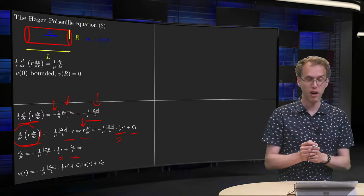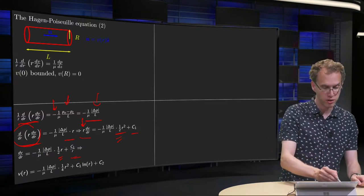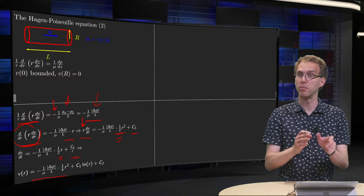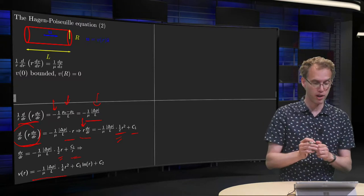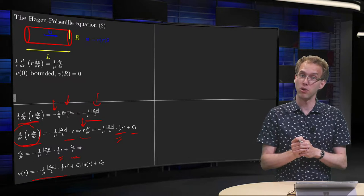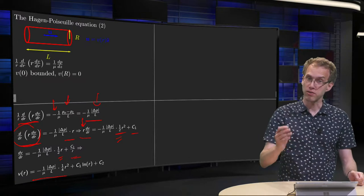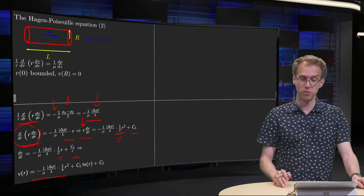So the one-half R squared here becomes one-half R, and C1 becomes C1 over R, and we integrate once more, and then we have V of R. First term yields some constant times one-quarter R squared, second term becomes C1 times the log of R, and then we have one more integration constant, C2.